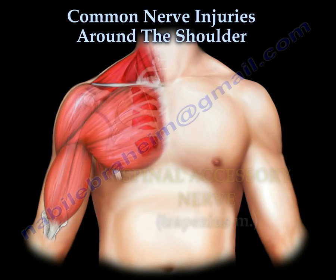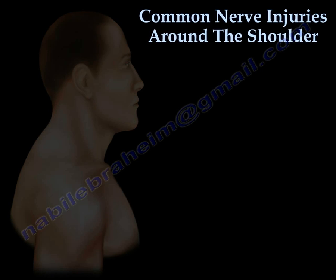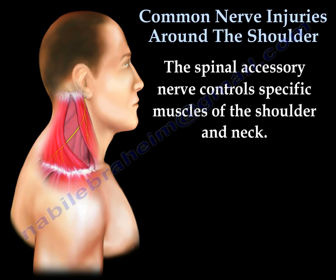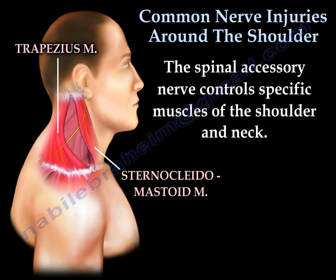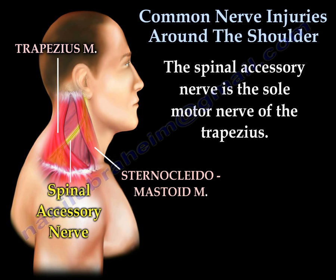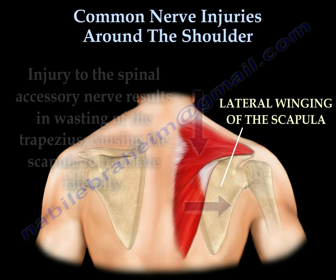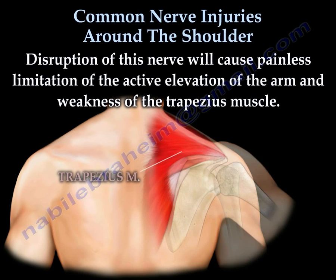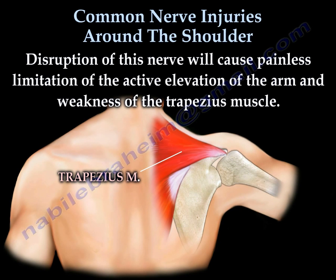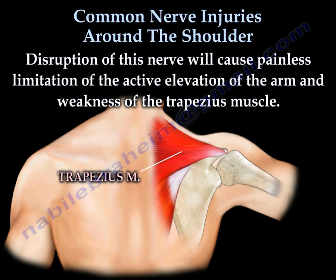The spinal accessory nerve controls specific muscles of the shoulder and neck. It is the sole motor nerve of the trapezius. Lateral winging of the scapula occurs due to injury of the spinal accessory nerve affecting the trapezius. Disruption of this nerve will cause weakness of the trapezius muscle and painless limitation of active elevation of the arm.